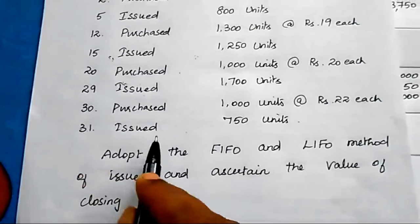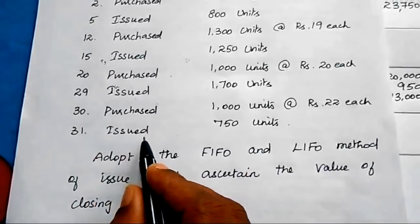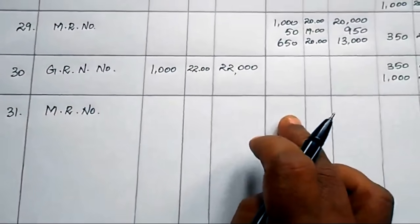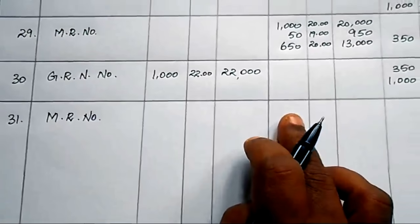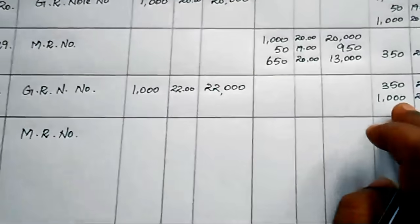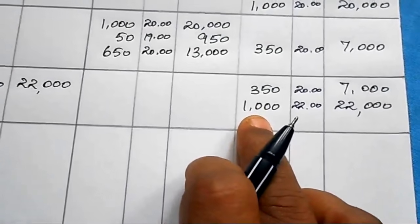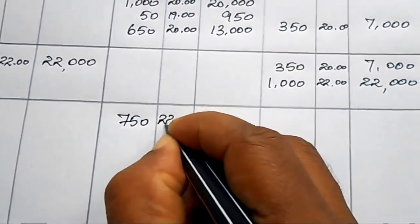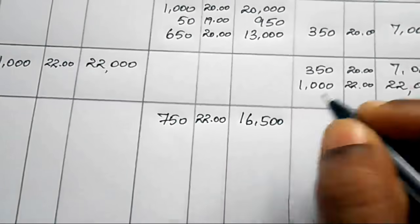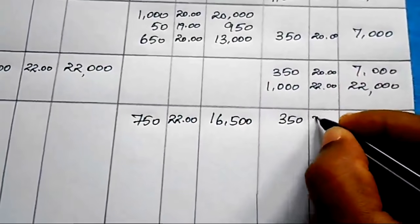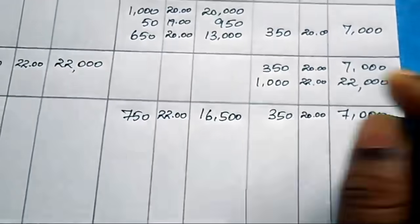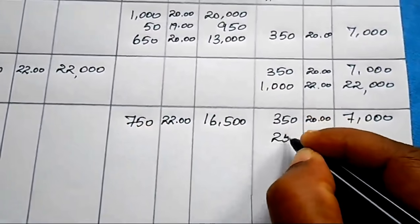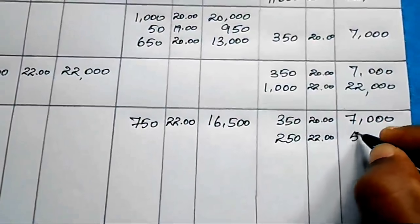On 31st May, issued 750 units. Write the Material Requisition number. According to LIFO, take from the last lot: issue 750 units from the 1000-unit lot at ₹22 = 750 × 22 = ₹16,500. Balance: 350 units at ₹20 = ₹7,000, and 1000 − 750 = 250 units at ₹22 = ₹5,500.